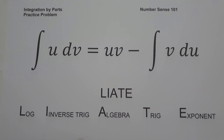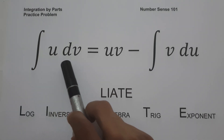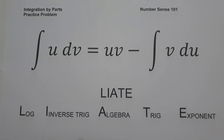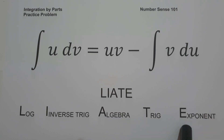In today's video, we are going to have a practice problem on how to solve indefinite integrals using integration by parts. We have a formula to remember: the antiderivative of U dv is equal to Uv minus the antiderivative of V du. One problem you may encounter is identifying the value of U, so I have an acronym: LIATE — logarithm, inverse trig, algebra, trigonometry, and exponent.